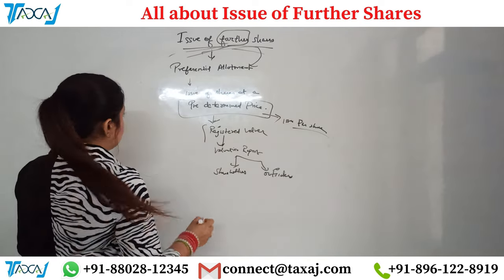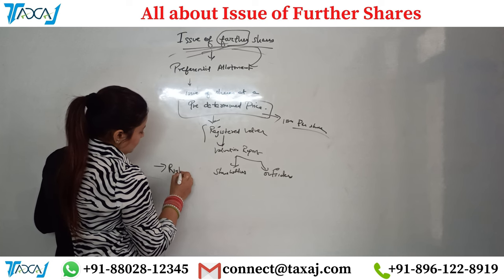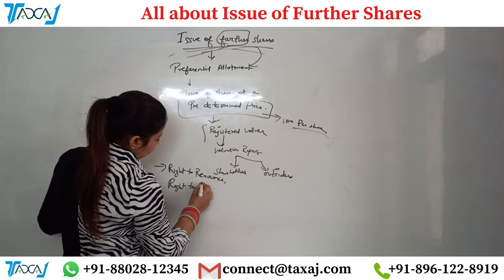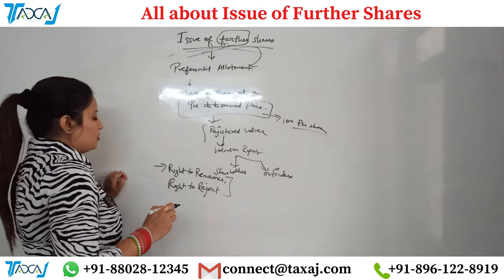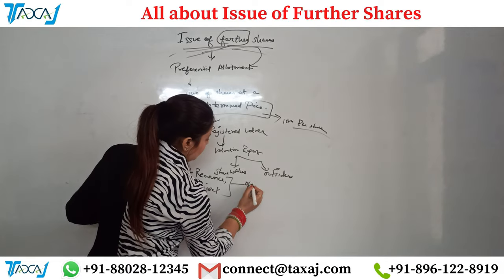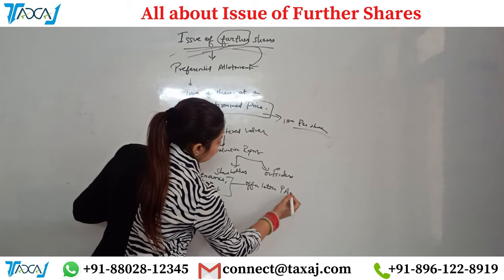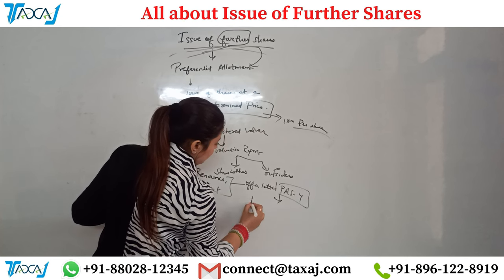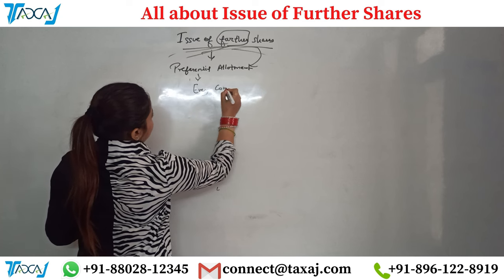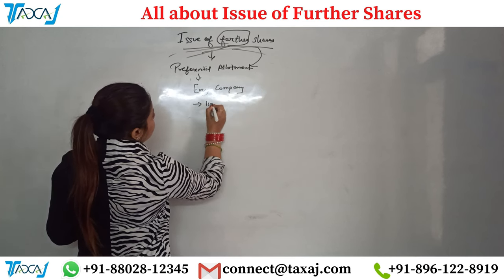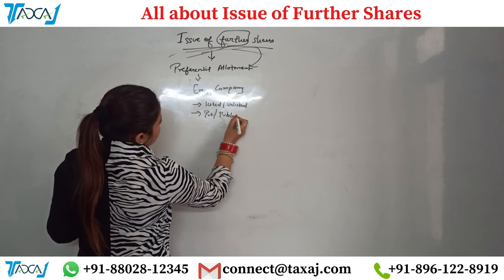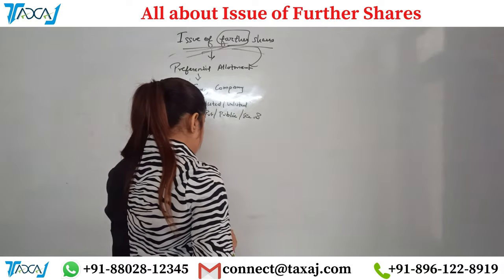The registered valuer prepares a valuation report and then approaches existing shareholders or outsiders with the offer. The most important thing here is that you do not have the right to renounce or the right to reject — if an offer letter comes to you, you must accept the shares. The offer letter comes in Form PAS-4, which has a prescribed format by the ROC. Preferential allotment is applicable to every company — listed, unlisted, private, public, or section-8 companies.